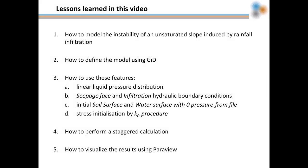In this video, you learned how to model with Anura3D the instability of an unsaturated slope induced by rainfall infiltration. You learned how to define the model using GID, in particular how to apply a linear distribution of liquid pressure, assign hydraulic boundary conditions such as seepage phase and infiltration, and assign the conditions of initial soil surface and phreatic surface from an external text file necessary to initialize stresses by the Keynote procedure. The simulation consisted of three stages, so you also learned to perform a staggered calculation, and finally to visualize the results in ParaView.